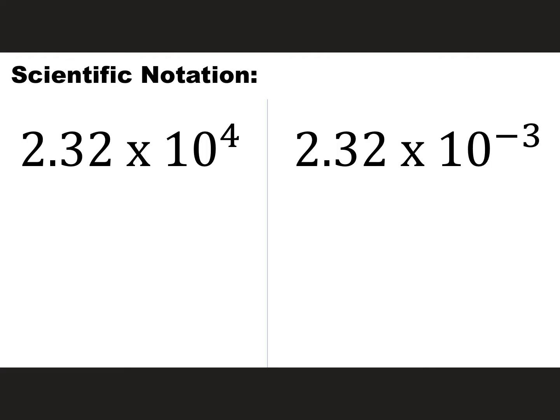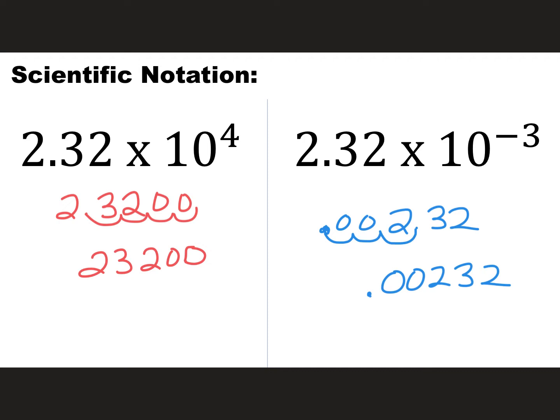Your turn. Pause the video and do this and come back and see how you did. I'm going to move this to the right because the four is positive. I'm going to move it one, two, three, four. The new decimal is going to be at the end. When the decimal is at the end, I do not need to show it. And then on the other one, I'm going to rewrite it again, except this time because the three is negative, I'm going to move it to the left. One, two, three. Put two zeros there and rewrite my number: 0.00232. How'd you do?